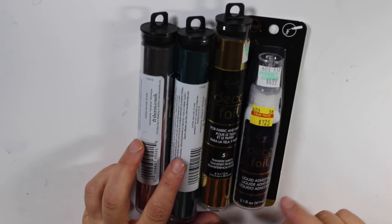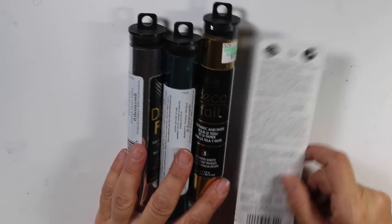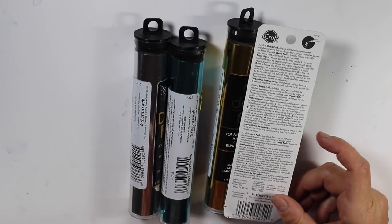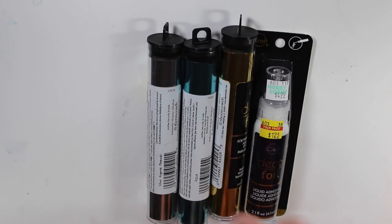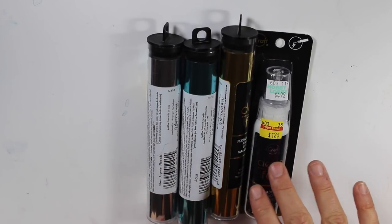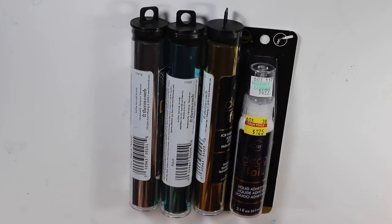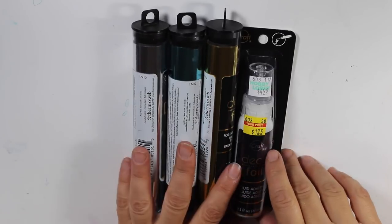And then I got this deco foil liquid adhesive that you're supposedly, I was reading the back that if you use this adhesive, it's kind of got like a fine tip and you make a design, you let it dry, then you can rub the foil on it. And I've seen a video where Tim Holtz kind of did that with the sticky embossing powder ranger where you like kind of do it and then you let it dry, you rub the foil with your finger and then it'll adhere. Anyways.